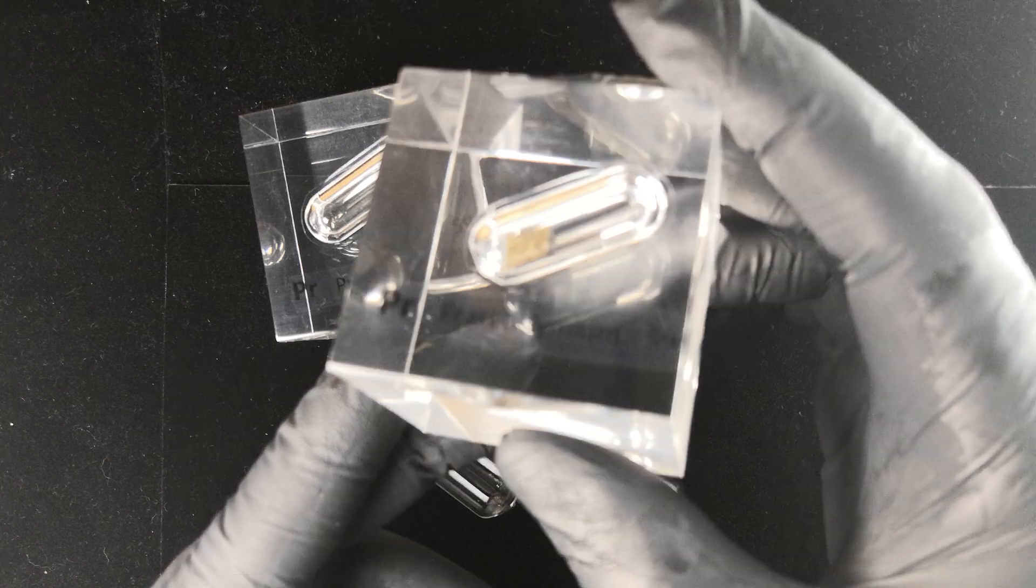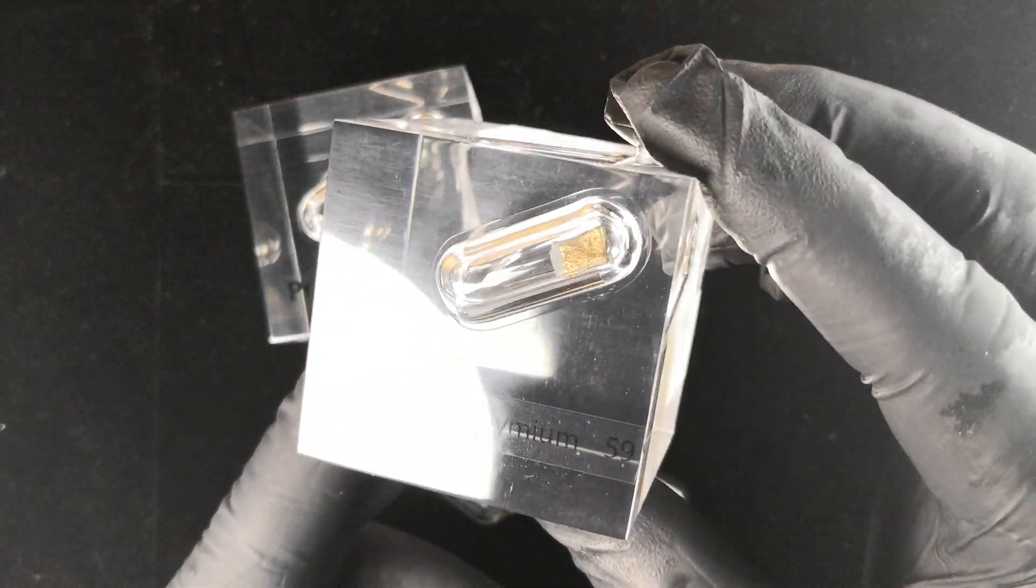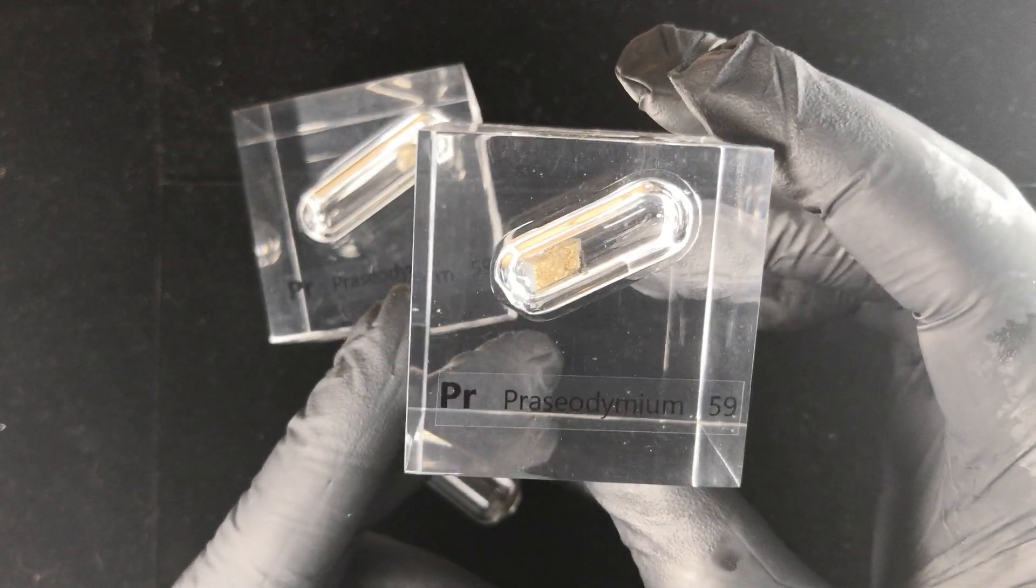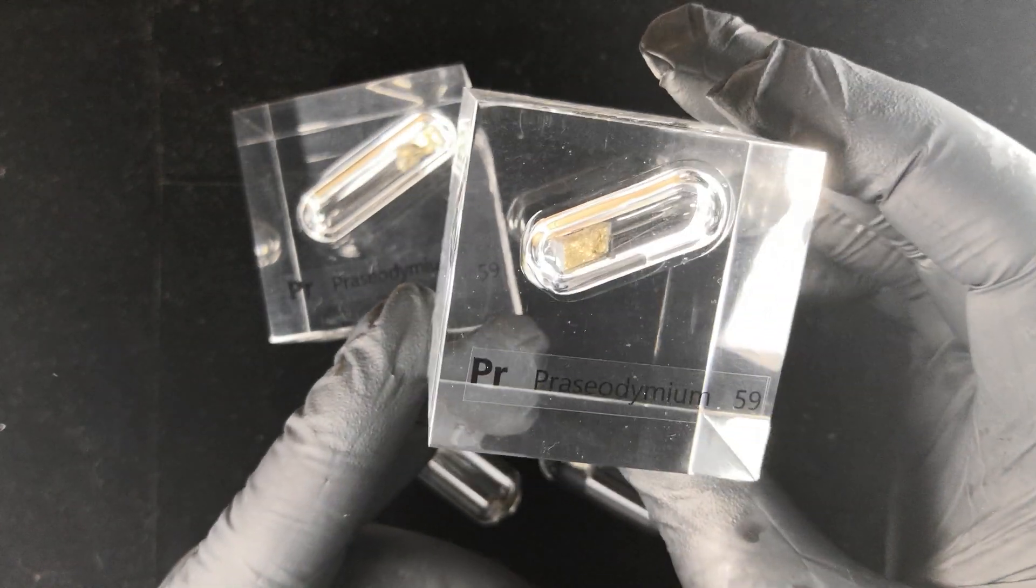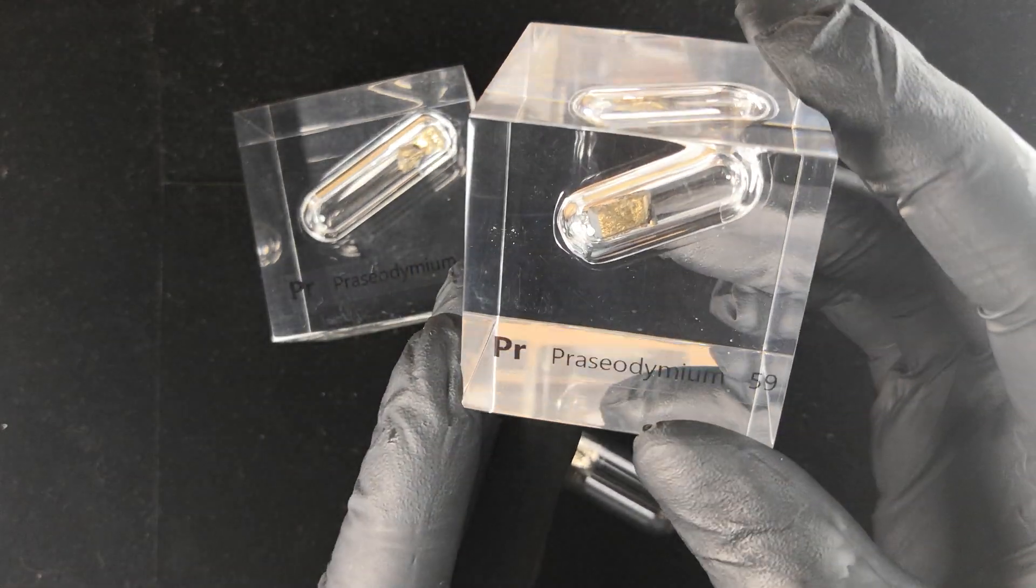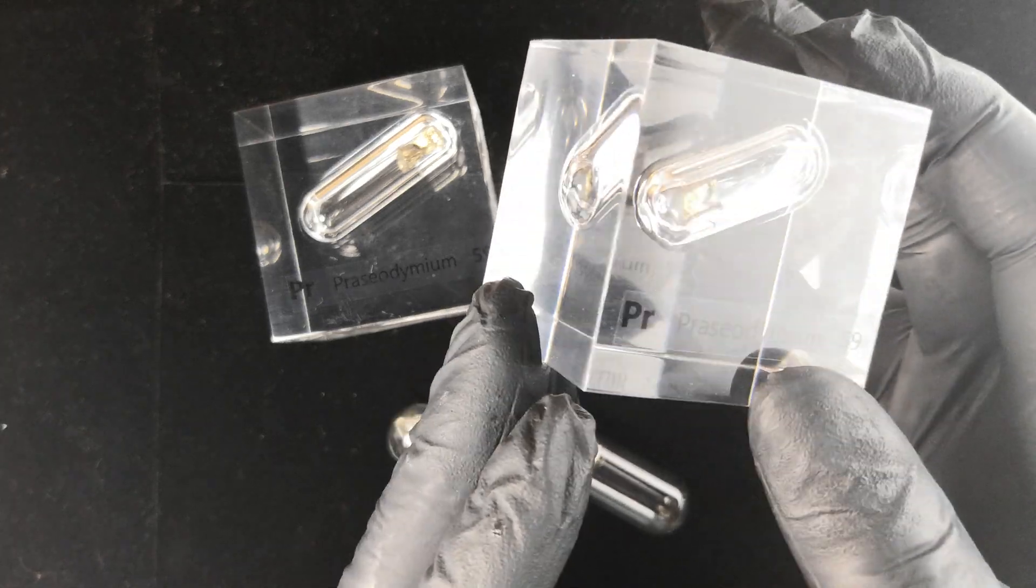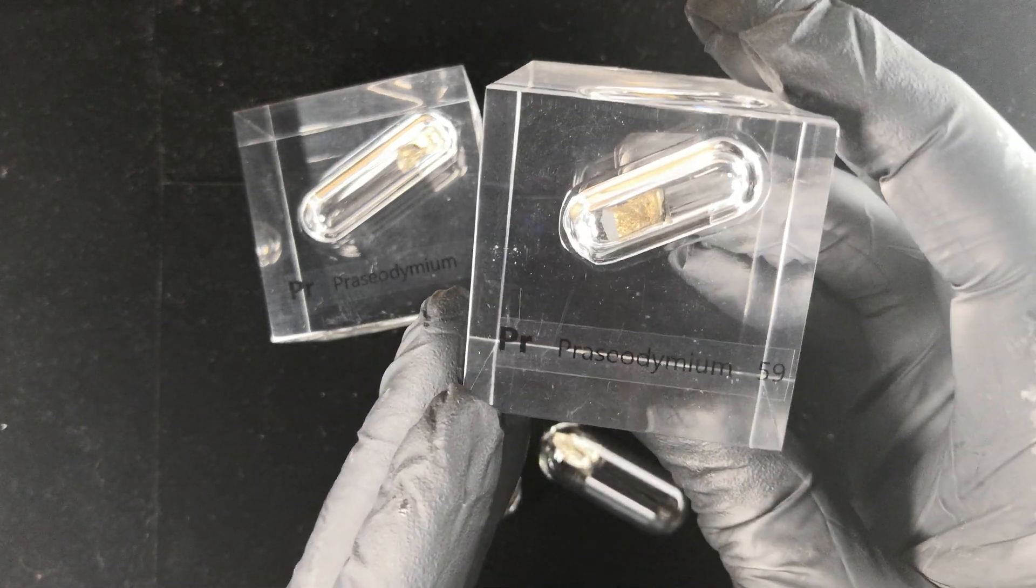And here you can see a sample of praseodymium weighing a couple of grams or so inside. This is what you could expect to get from one of these cubes. These metal samples are free-floating inside.